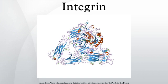Integrins are transmembrane receptors that are the bridges for cell-cell and cell-extracellular matrix interactions. When triggered, integrins in turn trigger chemical pathways to the interior, such as the chemical composition and mechanical status of the ECM, which results in a response such as regulation of the cell cycle, cell shape, and/or motility, or new receptors being added to the cell membrane. This allows rapid and flexible responses to events at the cell surface, e.g. to signal platelets to initiate an interaction with coagulation factors.